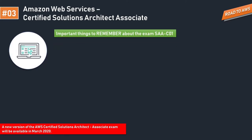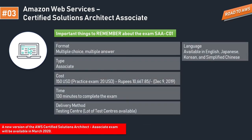The next important things to remember about the exam: the exam code is SAA-C01, where SAA means Solutions Architect Associate. The format is multiple choice — you get a question scenario with four answer options. These scenarios are designed to judge whether you've understood the concept, so you can't randomly guess. You need to read all the answers carefully to find which scenario fits the question. The exam type is Associate, the cost is around $150 USD, and there are practice exams available on the AWS site for $20.